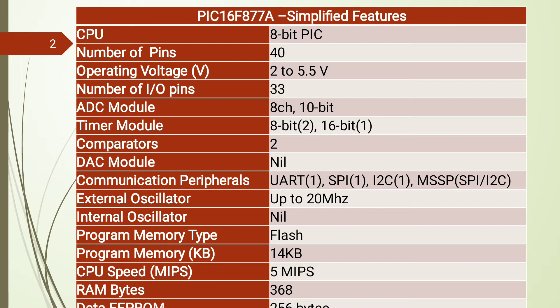The operating voltage for PIC16F877A is from 2V up to 5.5V, and it depends on the package — DIP or SMD. For SMD package the required supply voltage is reduced compared to the DIP package. Out of 40 pins, the I/O pins available in PIC16F877A are 33, and these pins are split into 5 ports.